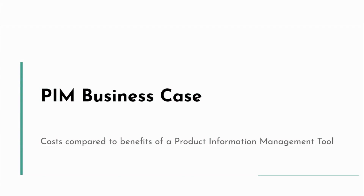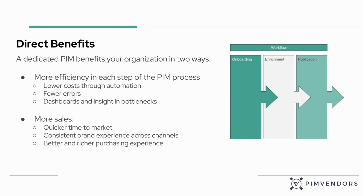Let's check the PIM business case. Does it make sense to implement a PIM when you compare the cost to the benefits of a product information management tool, and where do those benefits come from? A PIM brings direct benefits in two ways. You have more efficiency in each step of the PIM process — lower costs because of automation, fewer errors because of data validation rules, and you can identify bottlenecks to solve issues immediately instead of after the season has basically ended.